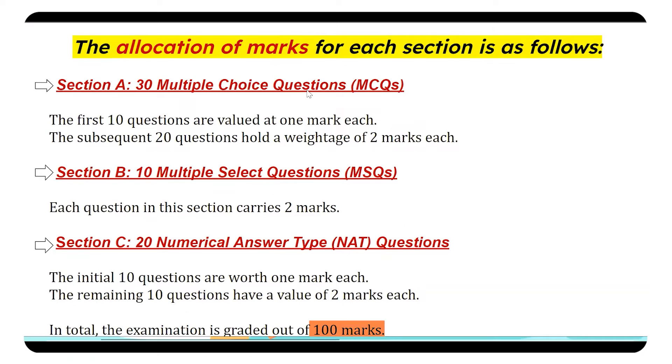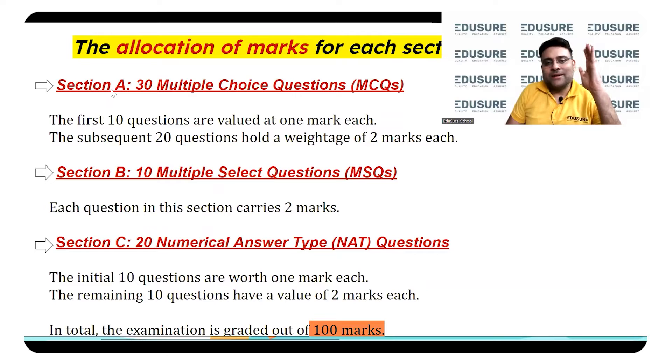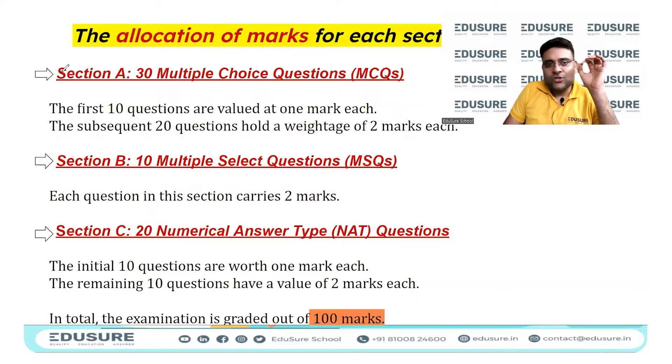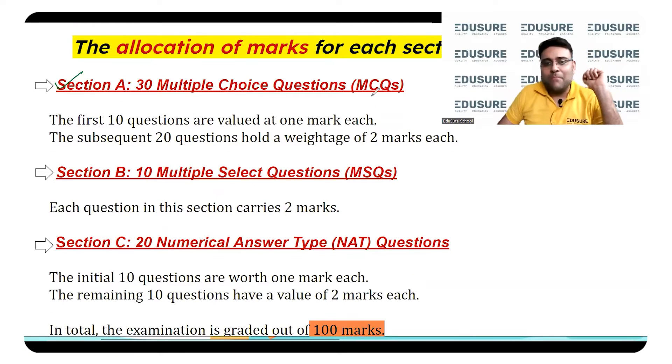Talking about the paper pattern, it's important to know how the paper is segregated in terms of different sections. The first section of IIT JAM contains MCQs, and the topics can be anything - math, economics, Indian economy, everything combined. I'm only talking about whether the questions are MCQ, MSQ, or NAT currently. Any topic can appear in any of the three sections. There is no segregation like IIT GATE where section A will only ask you general aptitude. Any topic can be asked in any of the three sections.